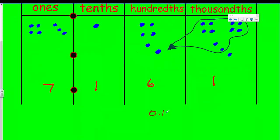I have one hundred and forty-eight thousandths — we're going to add that to seven and thirteen thousandths. Eight plus three is eleven — we have to carry that one into the hundredths column, so now we have five. So it went up with six — one plus zero is one. And now my decimal place — bring it on down, bring it on down. And then seven over here. We get seven and one hundred sixty-one thousandths. Yes! Can you see that? Oh my goodness — do I sound excited? It's because I am.